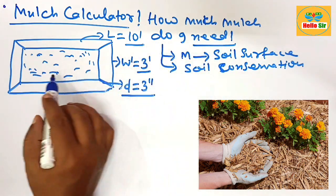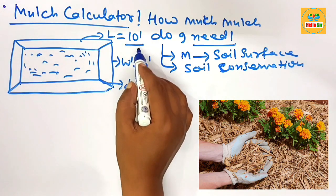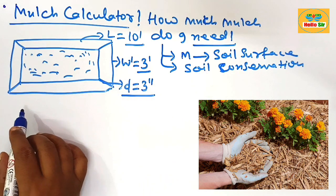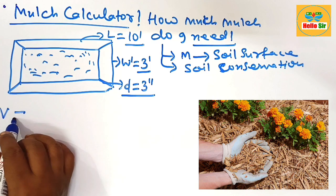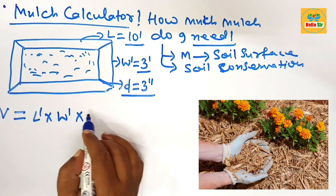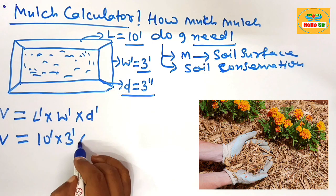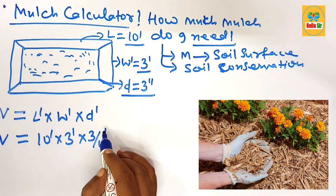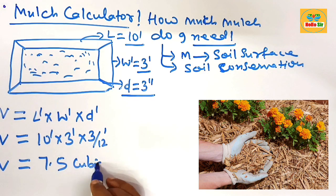How much mulch do you need for that project? First, measure your flower bed area: 10 feet in length, 3 feet in width, and 3 inches in depth. Then multiply length, width, and depth to calculate the total volume. The volume equals 10 foot × 3 foot × (3/12) foot, which comes out to about 7.5 cubic feet.